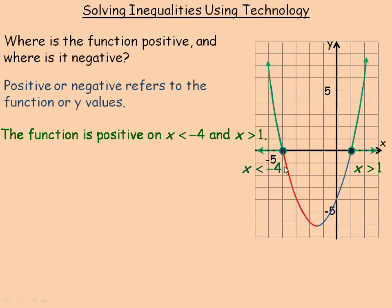Where is the function negative? The red tracing shows all the places on the graph where y values are negative. We don't include either endpoint, just between those two points — between negative four and positive one. So we would say where x is greater than negative four and less than one, the y values are negative.